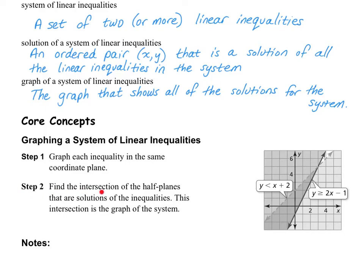Step 2 is to find the intersection of the half planes that are the solutions of the inequalities. This intersection is the graph of the system. Since this area right here is double shaded, all of the points within that double shaded area are solutions. For example, (0, 0) is a solution of the whole system, (0, 1) is another solution, and (-2, -1) is another solution. There are many, many solutions in this system of linear inequalities.